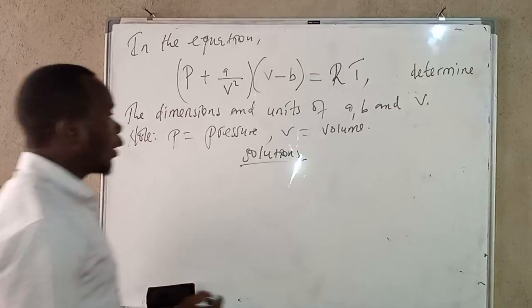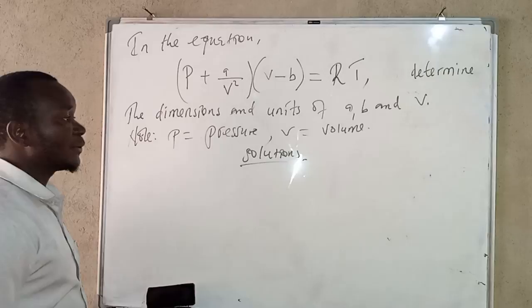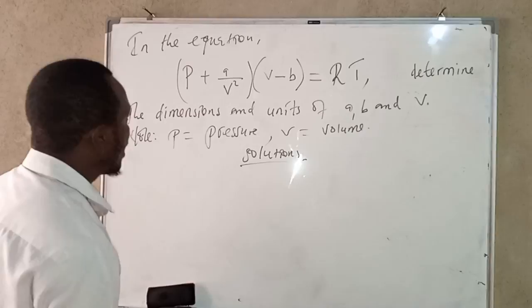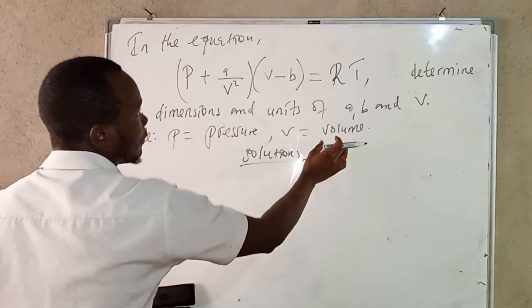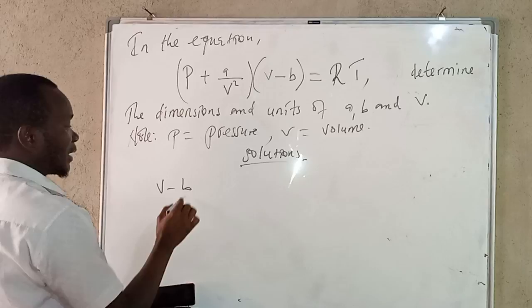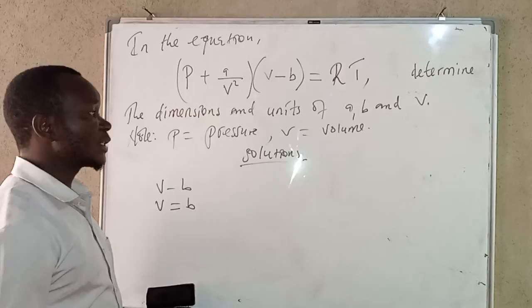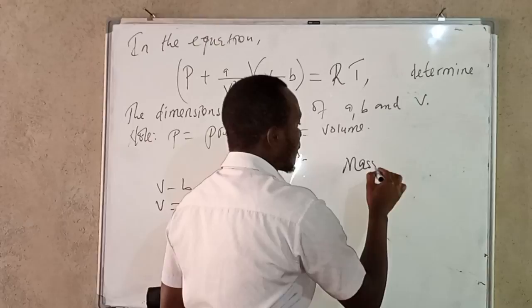Let's look at the solutions. We know from the principle of homogeneity that quantities you add or subtract must have the same dimensions. So by that principle, we can begin with the first bracket. Since we know V is volume and B is a constant, we have V minus B, so in terms of dimensions, B must equal V.